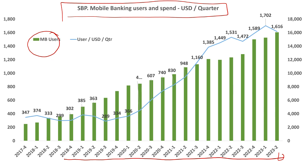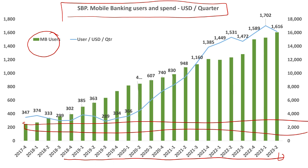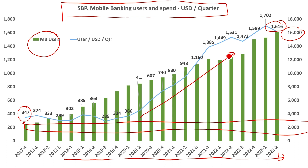The green bars represent the count of mobile banking users, which went from about 3 million in 2017 to just over 16 million in 2023. The quarterly spend in USD terms was about $300 to $350 in 2017 and now stands at about $1,600. There has clearly been an upswing in spending patterns over the last six years.